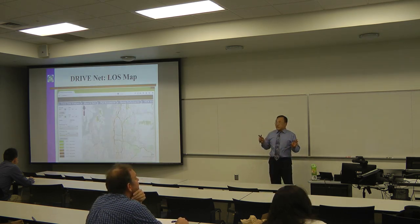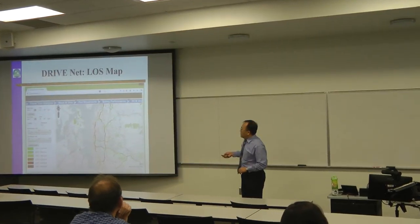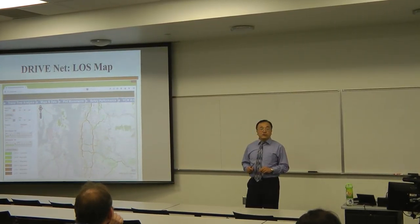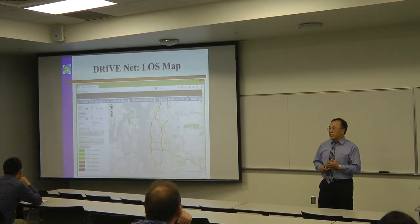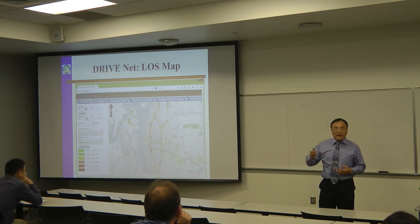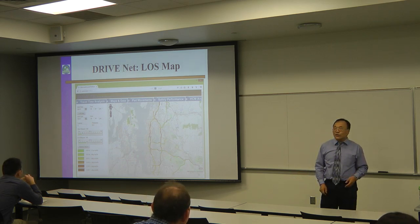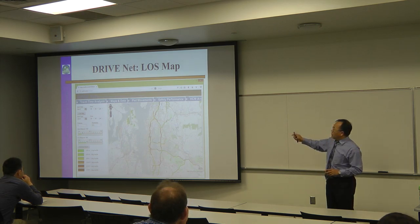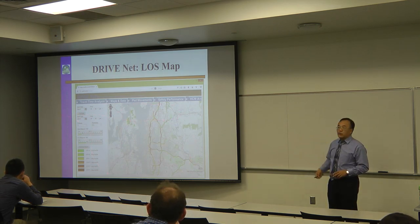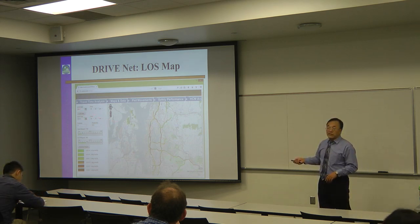We built a bunch of things for decision support. For example, this is a level of service map. The Highway Capacity Manual offers a level of service system — it's relatively complicated. You grab the geometric information, get the volume data, convert vehicles into passenger car equivalents, and account for grades. Now if you click the button, this gives you the whole network in a couple of seconds.